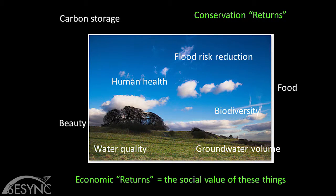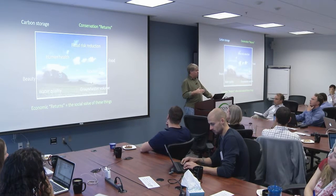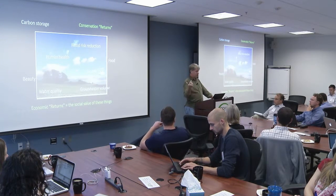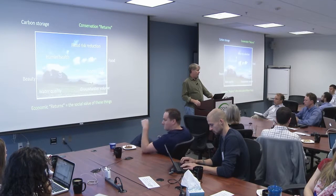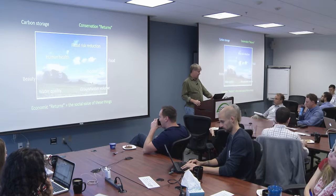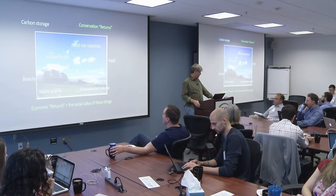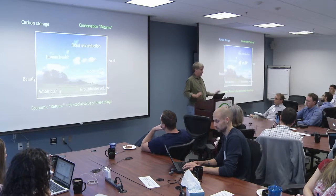When we conserve or manage natural resources, we can think of that delivering a set of returns. This is a partial list of the kind of things we would mean by returns—the biophysical objectives of what we're doing. We're trying to enhance biodiversity, generate food, generate better health outcomes, provide beauty, those kinds of things. The conservation returns are what we get from either conservation protection or management, and the economic returns are the social value of those things. Today we're going to focus on the conservation returns.